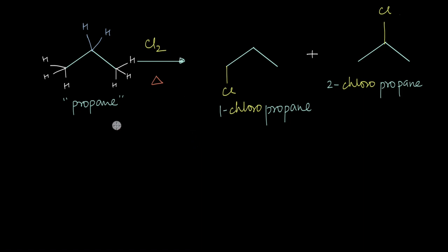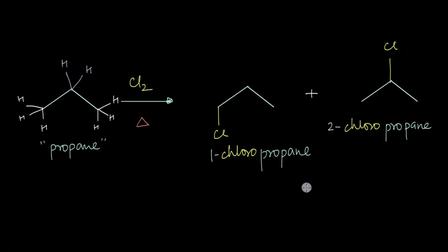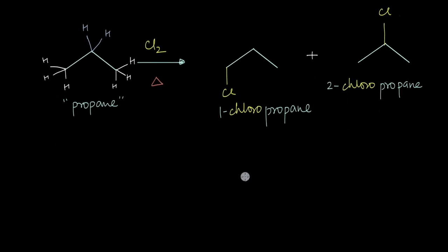Whenever we add chlorine to propane in the presence of heat or UV light, we get a mixture of 1-chloropropane and 2-chloropropane as our products. In this video, we are going to look at how much is in the form of 1-chloropropane and how much is in the form of 2-chloropropane — is it 50/50 or something else?